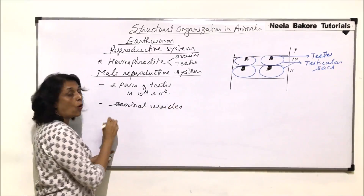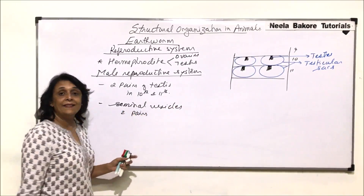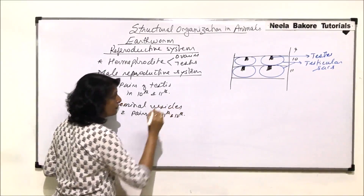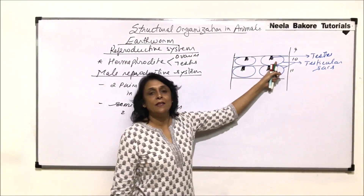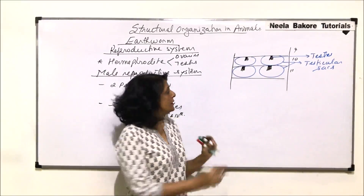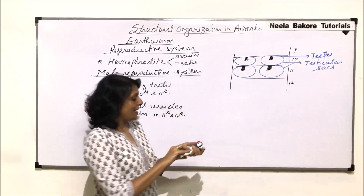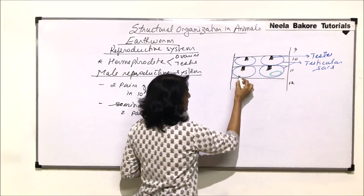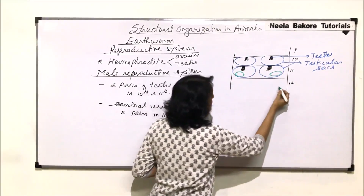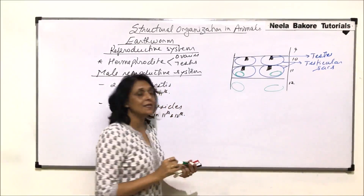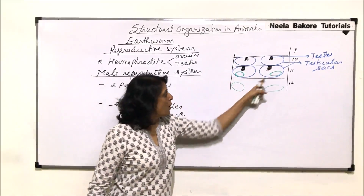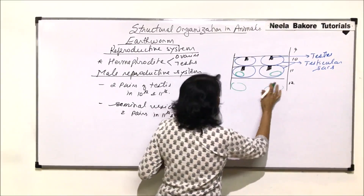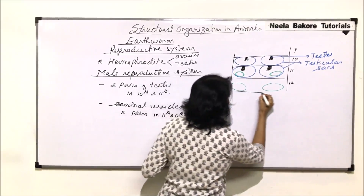Seminal vesicles are also two pairs and they are present in the 11th and 12th segments. For the 10th segment testes, the seminal vesicle is in the 11th segment, and for the 11th segment testes, it is in the 12th segment. The glands are circular and large — the ones in the 12th segment are comparatively bigger.